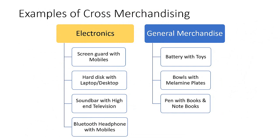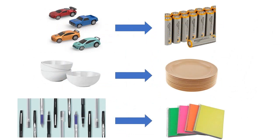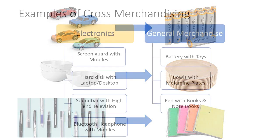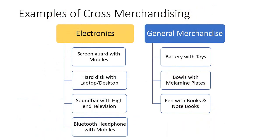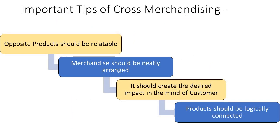We can also place Bluetooth speakers with laptops. In the general merchandise section, we can place batteries with toys, balls with melamine plates, and pens with books. Now that we have seen examples of cross merchandising, let us conclude with some important tips.